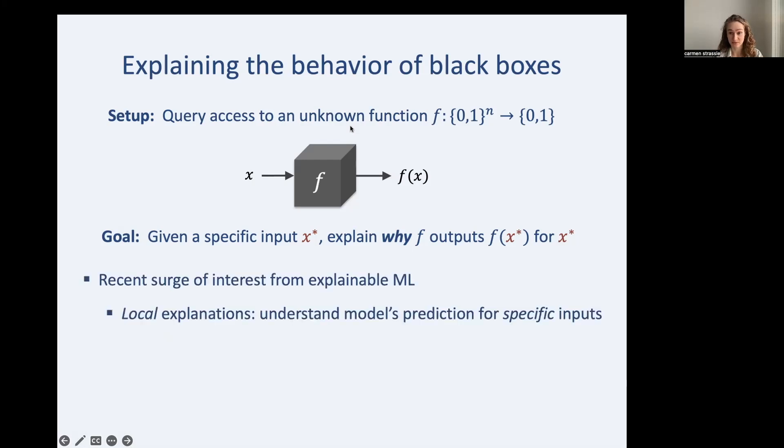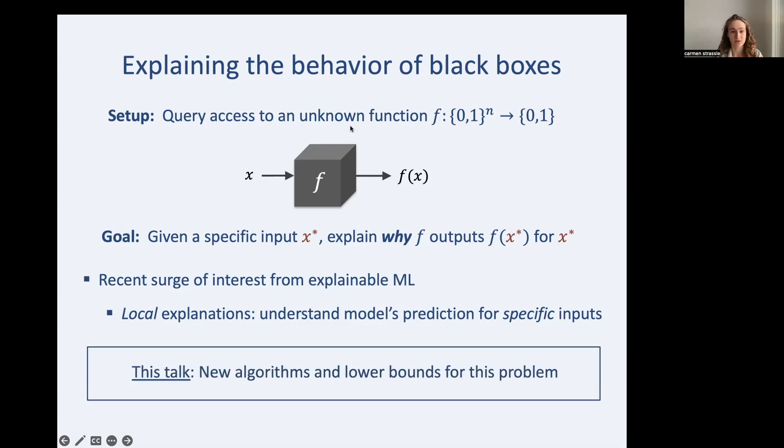There's a lot of interest in answering this question from the explainable machine learning community. You can imagine why it might be interesting for machine learning people. Machine learning models are often quite opaque, and so being able to come up with simple explanations for why a model does what it does could be quite useful. We focus on local explanations, meaning we explain f's behavior on a specific input x star. Contrast this with trying to explain f's behavior in general. We just care about the local x star. So in this talk, we'll be giving new algorithms and lower bounds for this problem.